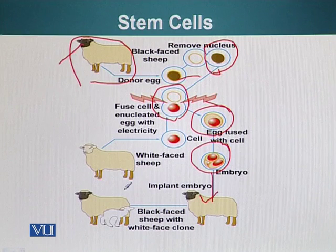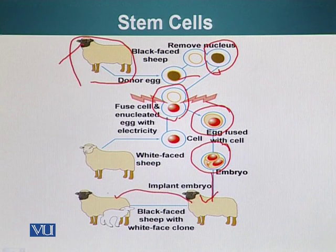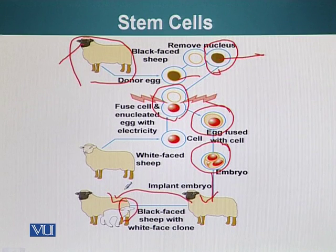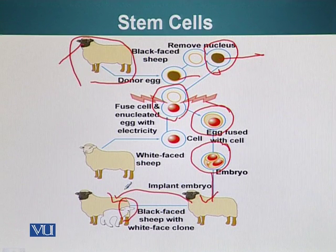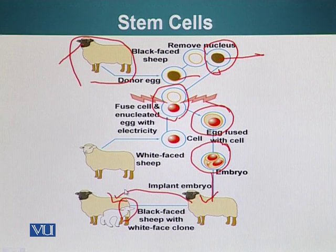The donor again happens to be a black face sheep. However, the lamb that is going to be produced from this fusion of two cells is going to have the same genetic makeup as the donor of the nucleus — the donor of the somatic cell. In our case it was a white face sheep, so you can see that this lamb has a white face. The genetic material present in the fertilized egg came from the white face sheep. So basically, we are going to use the same technique to make customized embryonic stem cells.